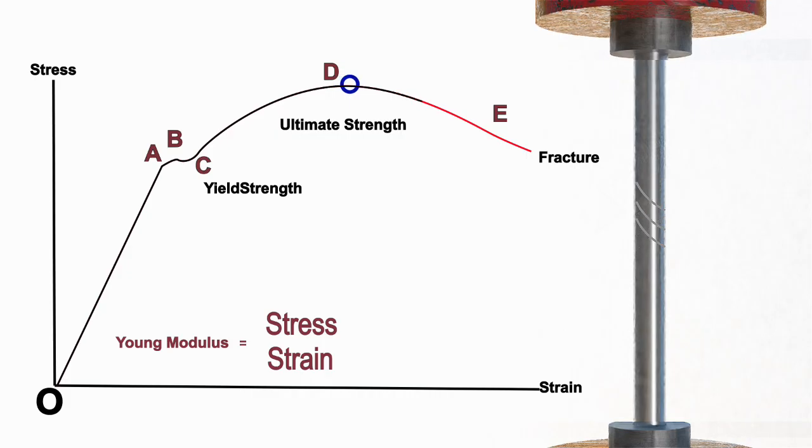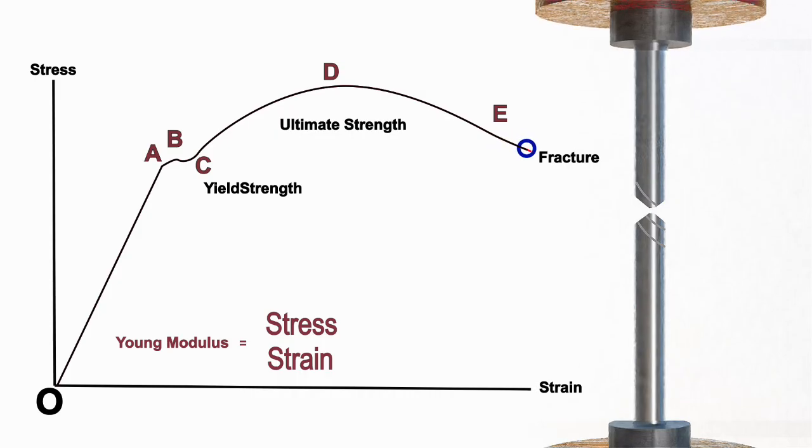After the ultimate stress point, we get the necking region. Necking starts from the ultimate strength point and is followed by cup-cone failure. You can see the failure at the end, which is separated as cup and cone.